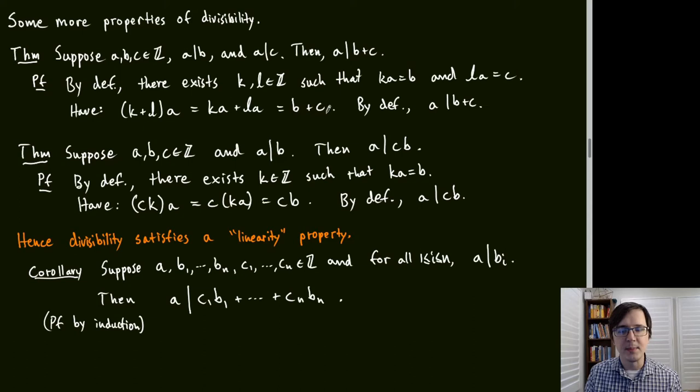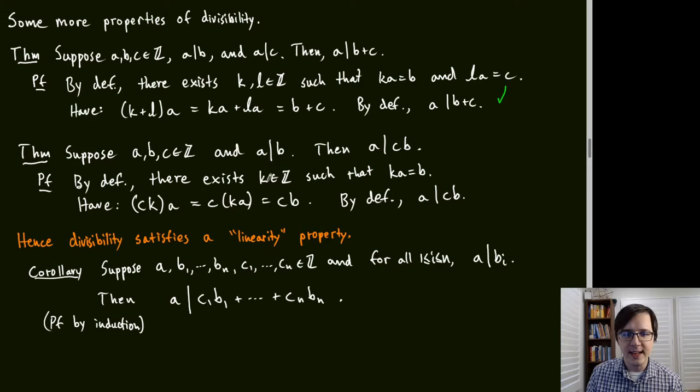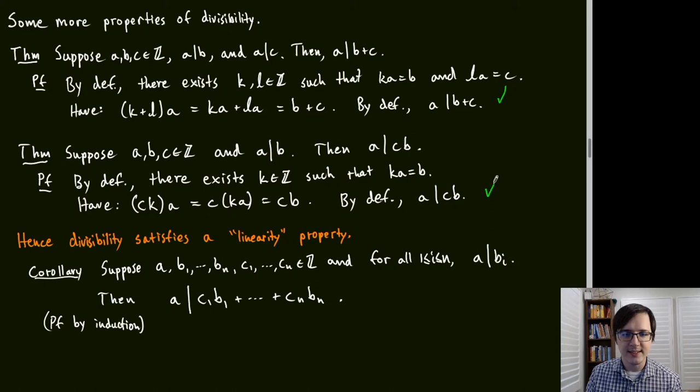Another theorem: if A divides B, then for any integer C, A divides CB. By definition there exists K with KA = B, and then CKA = CB by reassociating, so A | CB. Combining these two theorems, divisibility satisfies a linearity property.